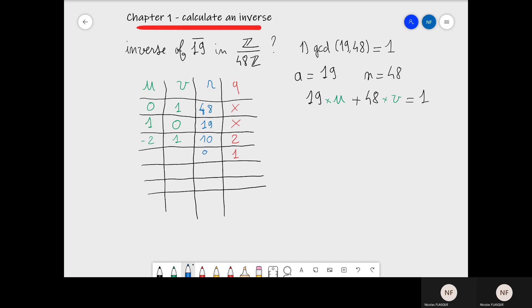Here the remainder is 9. 1 minus 1 times minus 2 is 1 plus 2, which is 3. 0 minus 1 times 1 is minus 1.